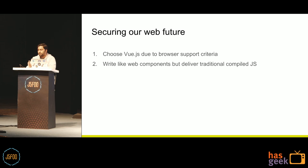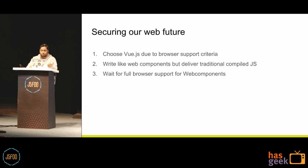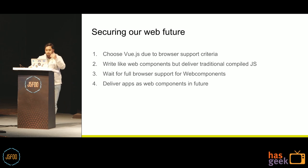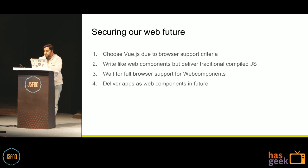We deliver applications as traditional compiled JS. Once browser support for web components comes in, we will still be writing code the same way. At that point we can re-evaluate and see if Vue is also supporting a web components build. Whether it is Vue, Polymer, or any other web component library in the future, our development pattern won't change by much — only a little syntactic sugar that individual frameworks introduce. Our development style and performance patterns all remain the same.